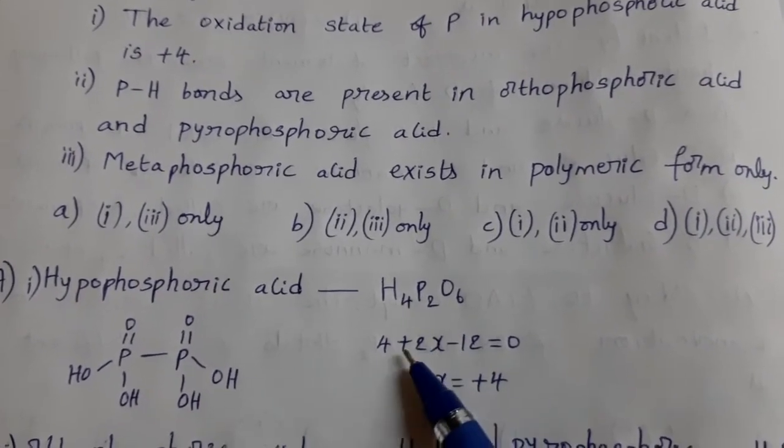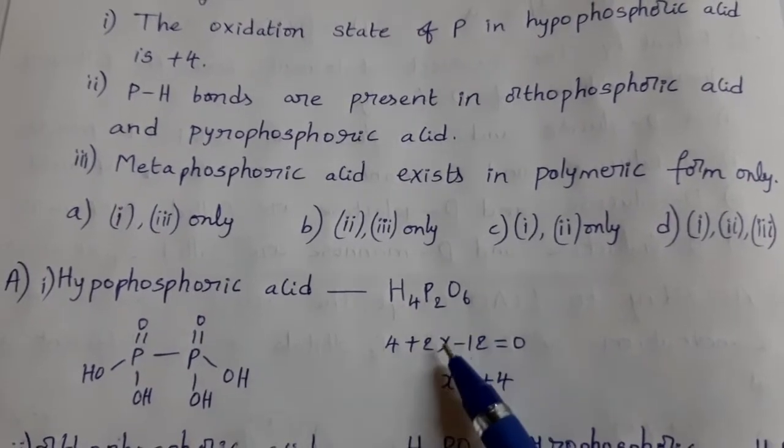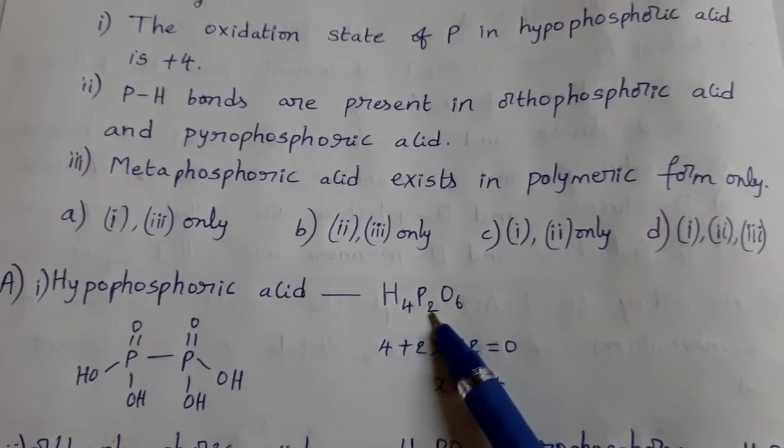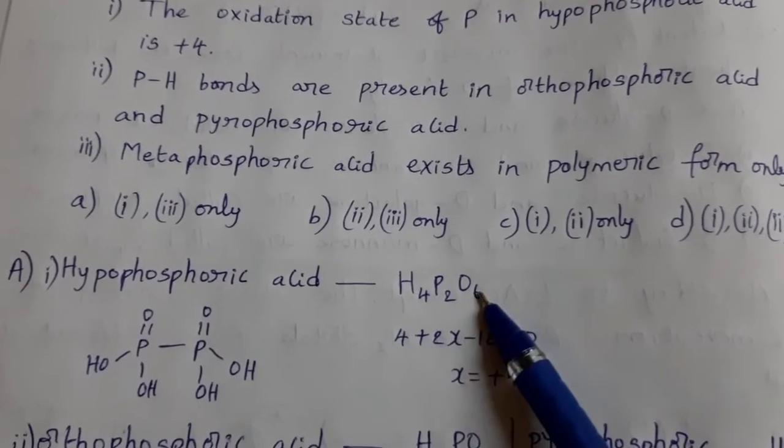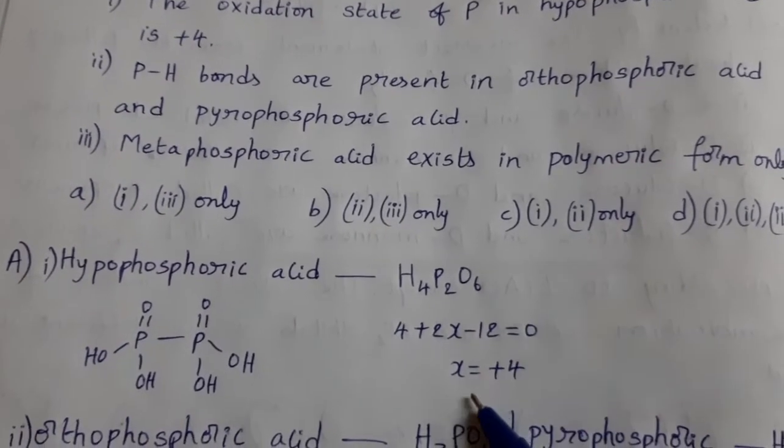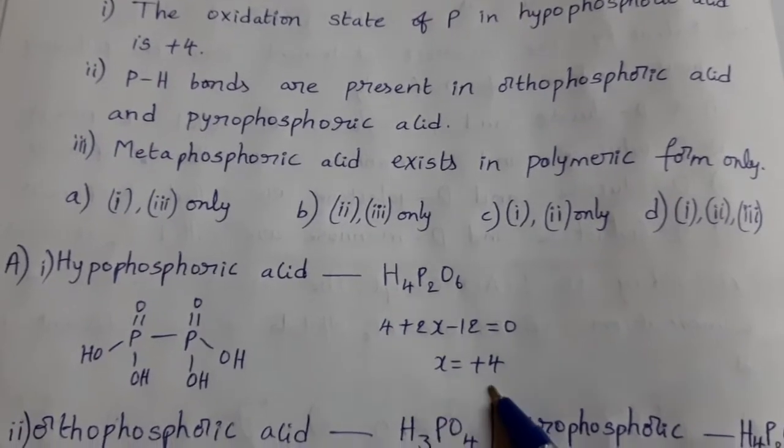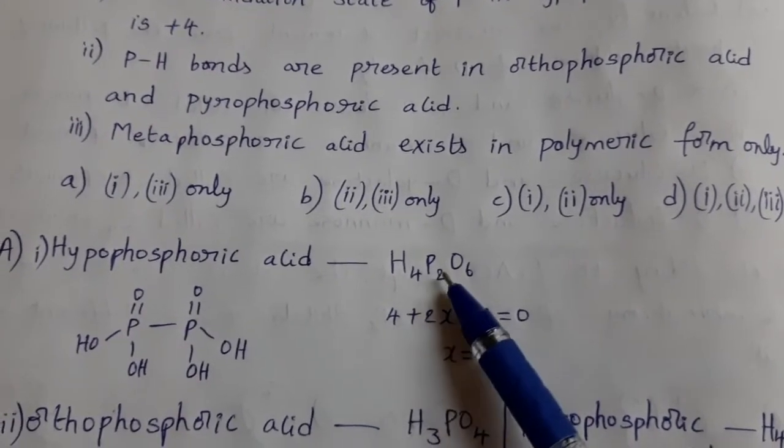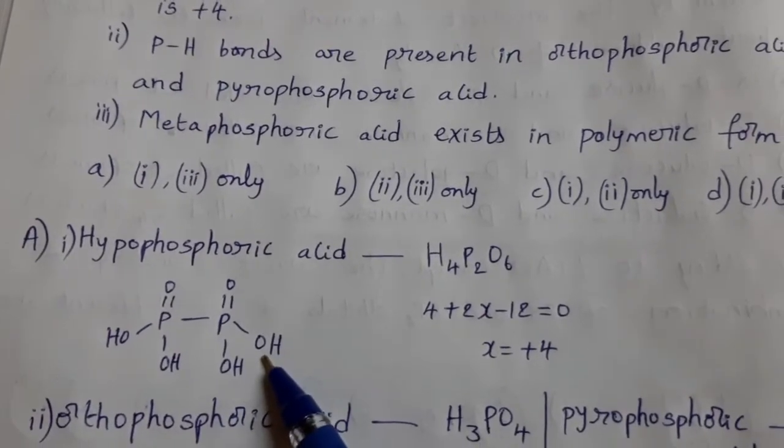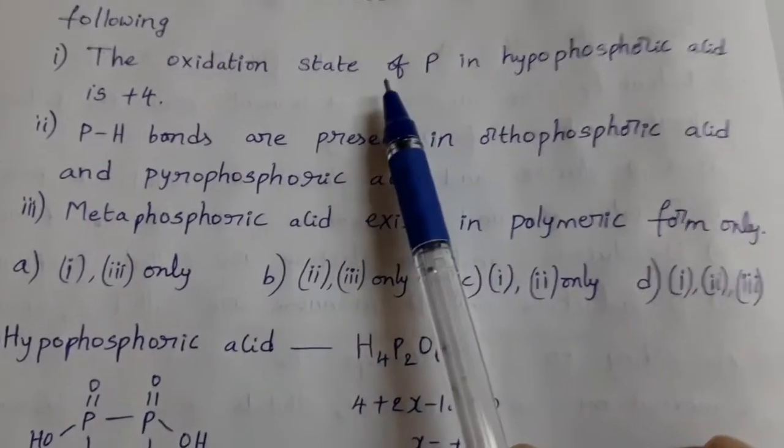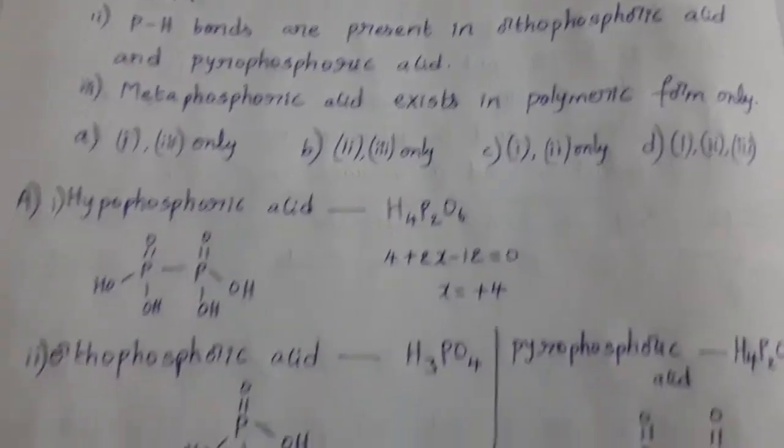Formula H4P2O6. We want phosphorus oxidation state. So for one hydrogen atom plus one, four atoms are there. Four plus one phosphorus X. Here two atoms are there. So 2X, one oxygen minus two. Six atoms are there, minus 12. Then X equal to plus four. It is the oxidation state of phosphorus. One phosphorus atom. This is the structure of hypophosphoric acid. So given statement one is correct.